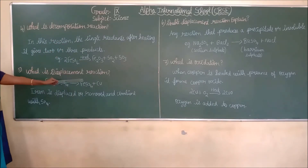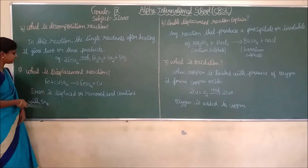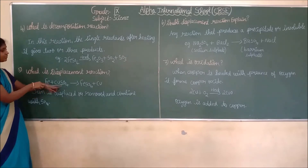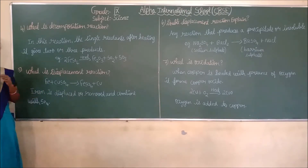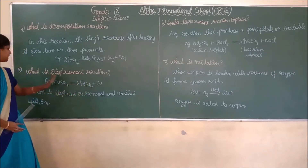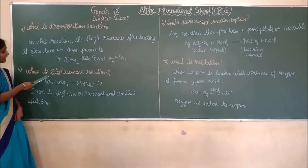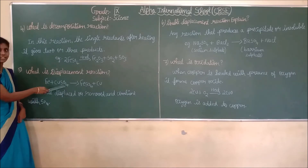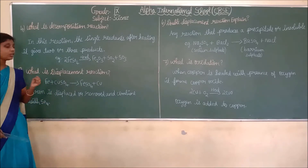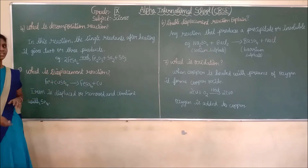What is a displacement reaction? Here, iron is displaced or removed and combined with SO4. Whenever one element is removed and combined with another element, we call it a displacement reaction. In this example, iron is removed and combined with sulphate to form iron sulphate.